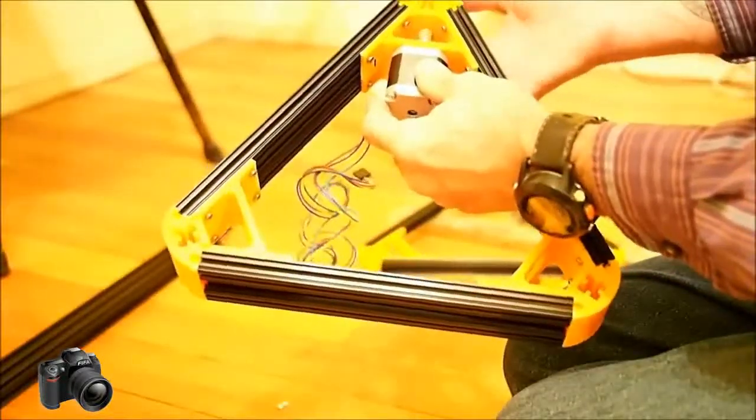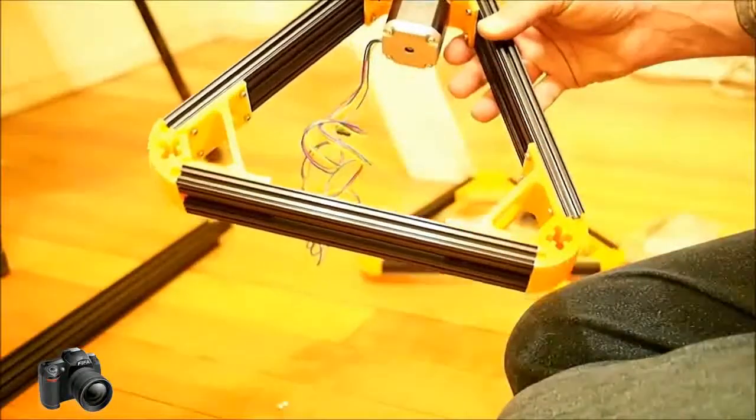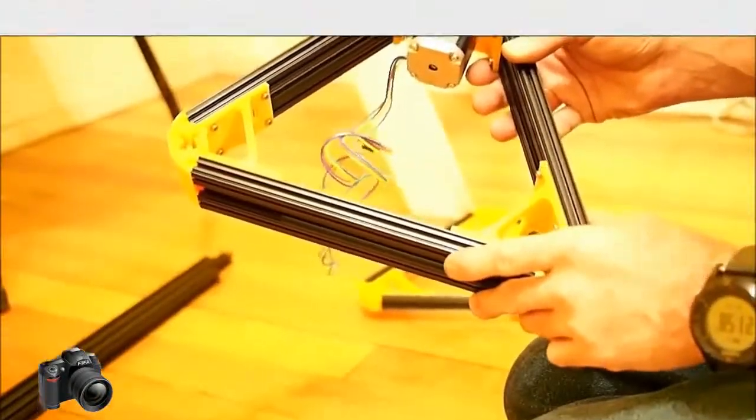In fact, you can see that it'll go all the way to the end of the plastic there without falling off. So you put the pulley on loosely and screw the motor in. We're going to do that with the other two motors and then at that point, this bottom piece will be pretty much done.